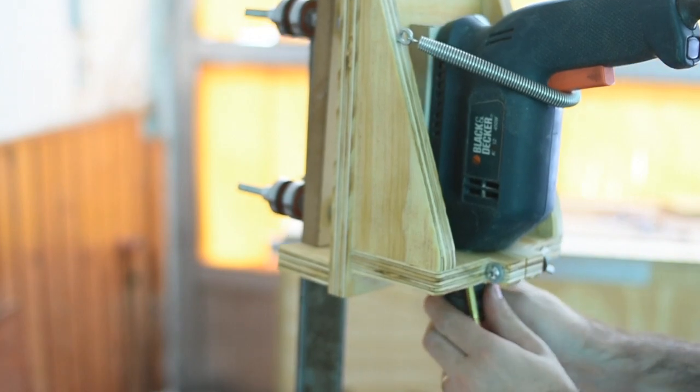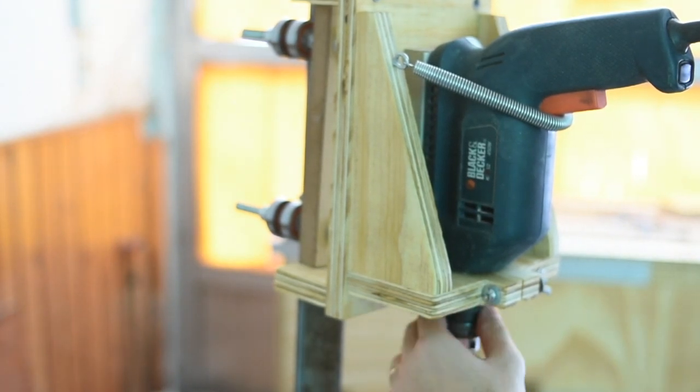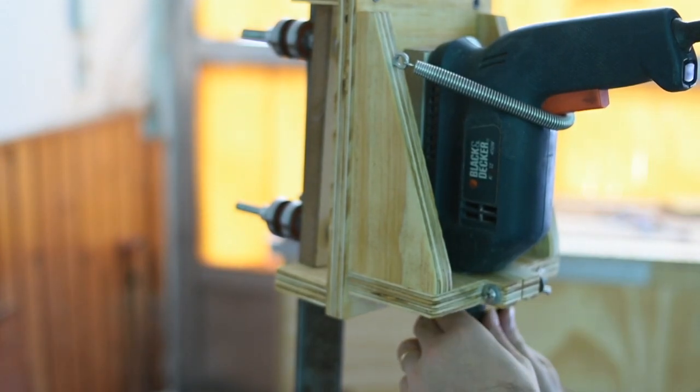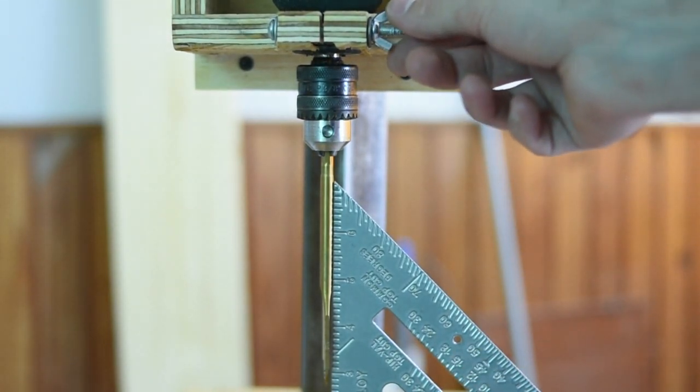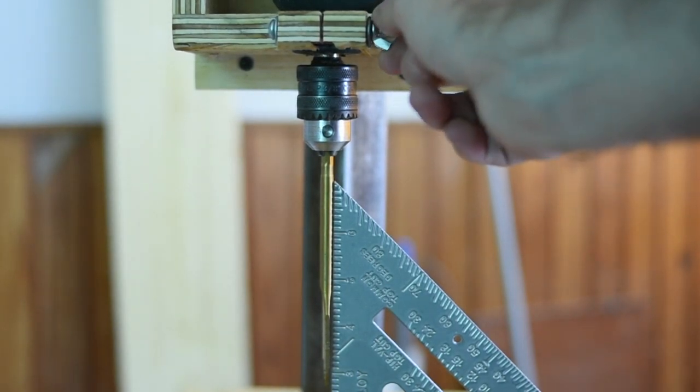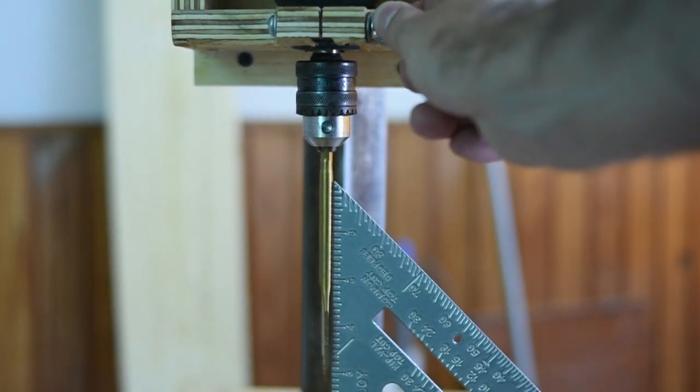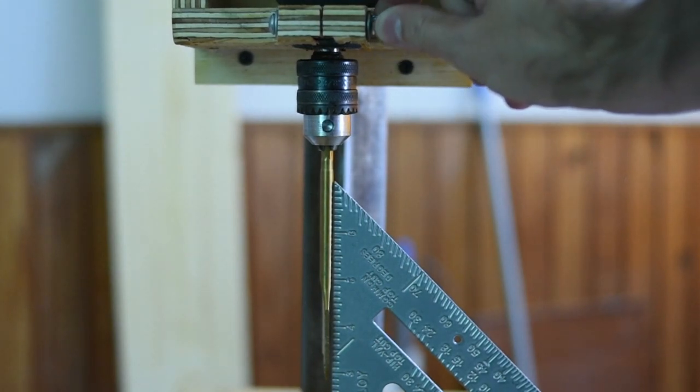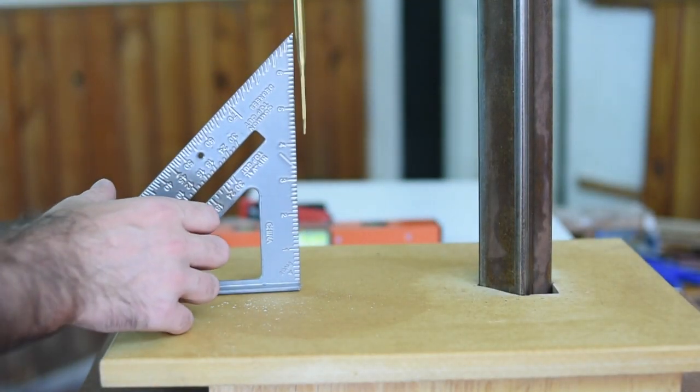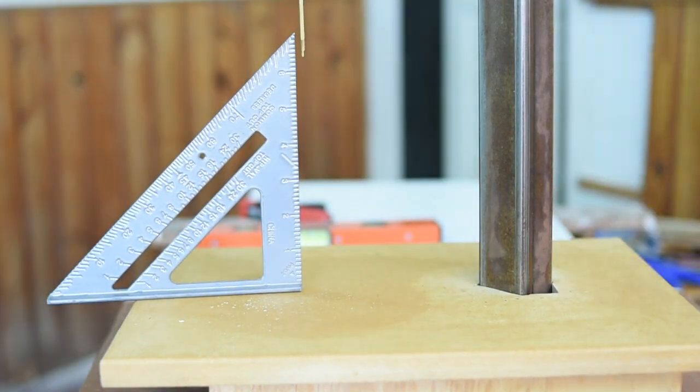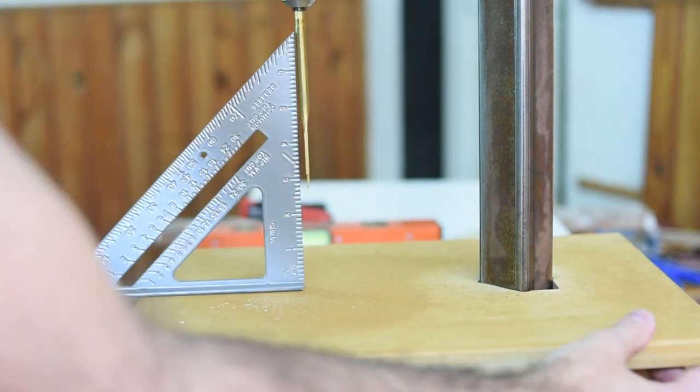Ahora vamos a ver el tema de cómo escuadrarlo. Fíjense que voy a ver que esté escuadrado con respecto al caño estructural ahí. Entonces una vez que ya lo tengo escuadrado lo aprieto definitivamente. Y ahora tendría que ver que esté escuadrado con respecto a la base. Fíjense que no me quedaba pero como la base estaba suelta es lo último que voy a atornillar. Me permite darle por medio de unos espesores la altura exacta para que me quede escuadrado.